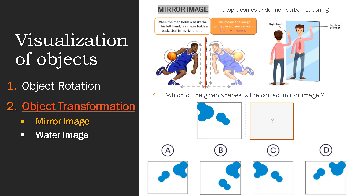There are three types of questions that can be asked in mirror image: letter-based questions, shape-based questions, and clock-based mirror image questions. For the shape-based example — which of the given shapes is the right mirror image — the mirror is placed on the right side of the image, so the top and bottom will not change; only the left and right portions will get interchanged. Let's see how the answer is formed.